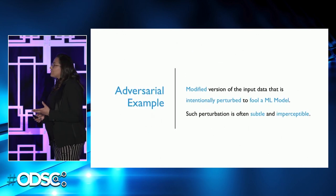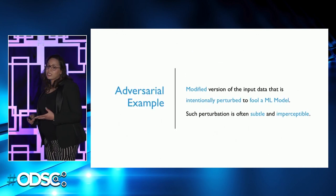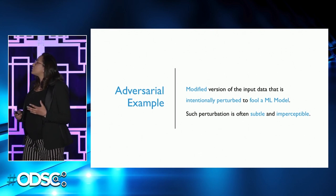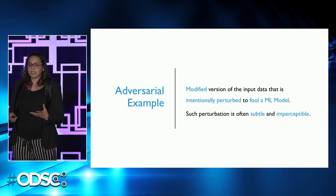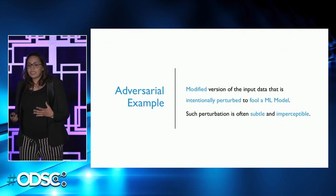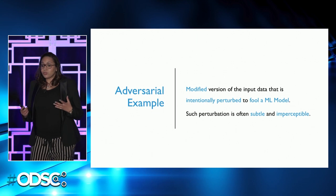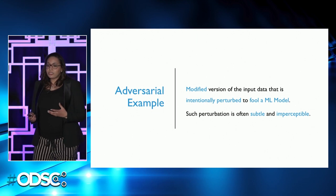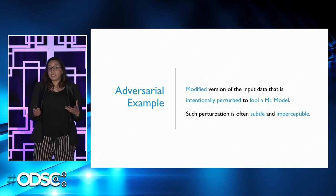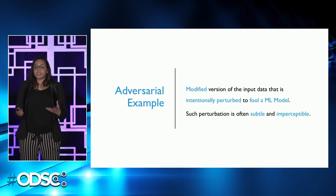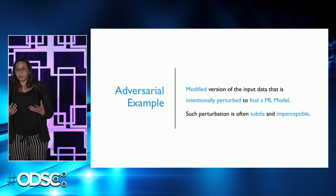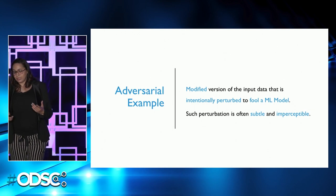The definition of an adversarial example is a modified version of the input data that is intentionally perturbed to fool a machine learning model. Such perturbation is often imperceptible to humans.